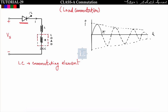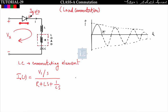Let's say I am triggering this SCR by supplying gate current — Ig is not equal to zero. So this SCR will be turned on and it will be replaced by a short circuit. When replaced by a short circuit, I can find the response I_o using Laplace transform. I_o(s) = V/s divided by (R + Ls + 1/Cs), which gives V·s/L divided by (s² + R/L·s + 1/LC).